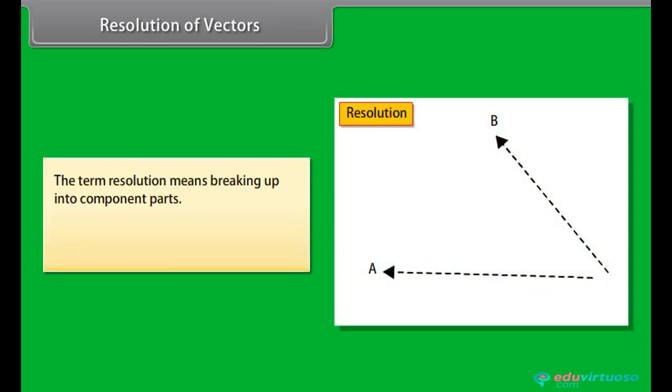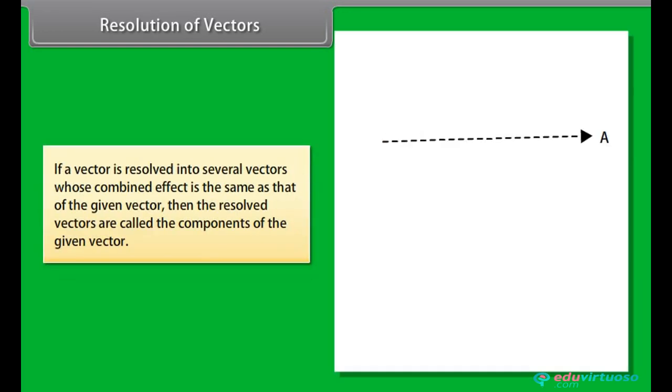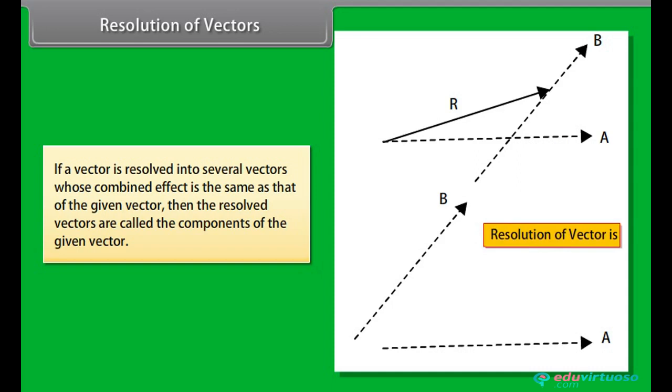Resolution of vectors. The term resolution means breaking up into component parts. The process of resolution is opposite to vector addition. Now, what are the components? If a vector is resolved into several vectors whose combined effect is the same as that of the given vector, then the resolved vectors are called the components of the given vector.